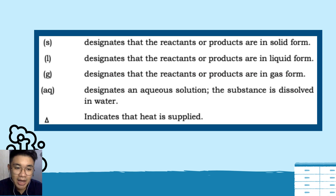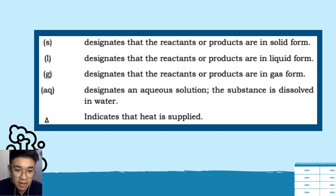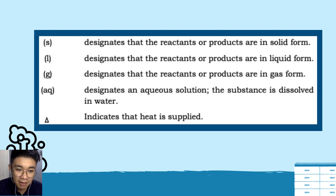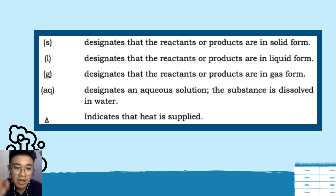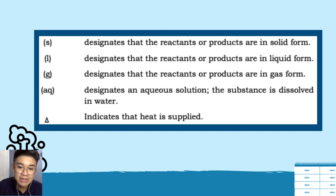When you see symbols next to an element or compound: (s) means it is in solid form; (l) means liquid form; (g) means gas form; (aq) means aqueous solution — the substance is dissolved in water. A triangle symbol above the arrow means heat is applied to the reaction.